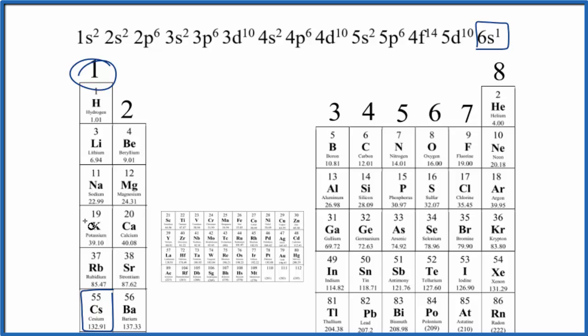So either way, cesium has one valence electron. If we wanted to draw the Lewis structure, we could just draw a Cs, and then we could put one valence electron right next to it here.